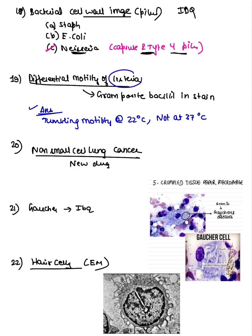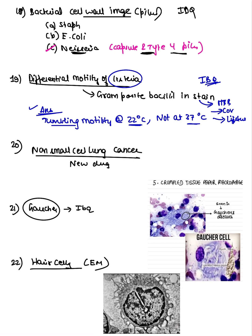They asked about Listeria — showing gram-positive bacilli on stain. Gram-positive bacilli include Mycobacteria and Corynebacterium — the mnemonic is McDonald's. The question was on differential motility. Listeria shows tumbling motility at 22°C but is non-motile at 37°C — that is important.